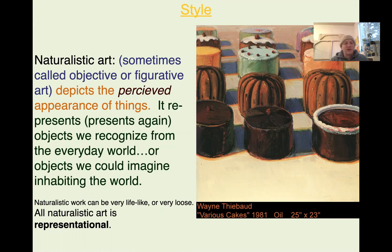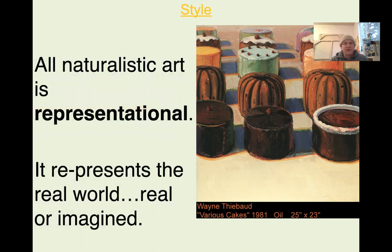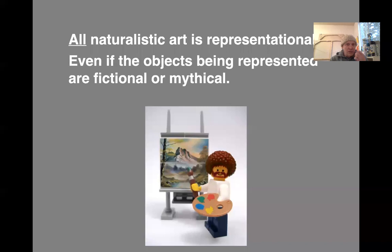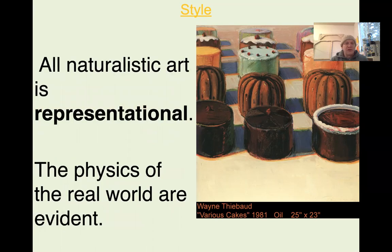All naturalistic art is representational. It could be very lifelike, or it could be very loose. You can see in the Wayne Thiebaud painting that this is naturalistic — the lines aren't all perfect, but it's representing real things. All naturalistic art re-presents the world, real or imagined. The physics of the real world are usually still there — gravity, the way things are interacting. If you've got someone floating upside down in a room, it's probably not the same kind of naturalism as we might see with idealism.